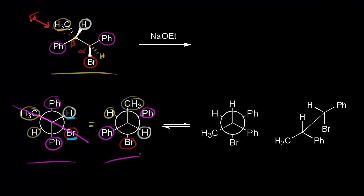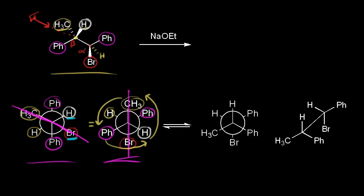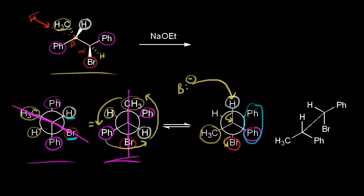Without a model set on a test, you must use your own drawings. When you realize the proton is not antiperiplanar, rotate the front carbon of the Newman projection. Moving the hydrogen in white up to vertical shifts the methyl group down and to the left and the phenyl group to the right. Now the hydrogen is antiperiplanar with the bromine. A base takes the beta proton, the electrons move in to form the double bond, and the electrons come off onto the bromine — so the two phenyl groups end up on the same side of the double bond.